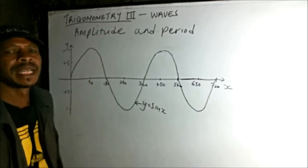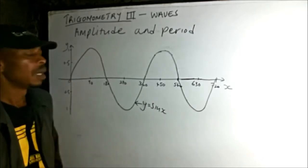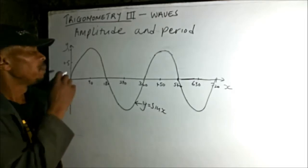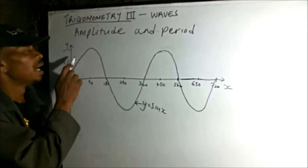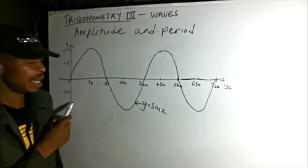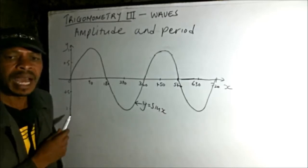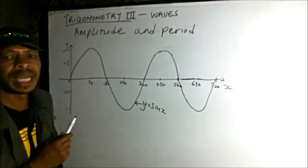You can see here my waves start from zero. On the positive side of y, I have 0.5 and 1. On the other side, I have negative 0.5 and negative 1. So we start with the amplitude.